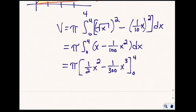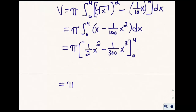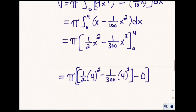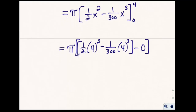We still have pi on the outside, and we evaluate from zero to four. We get one-half times four-squared minus one-over-three-hundred times four-cubed, and then subtract zero, because evaluating the function at zero gives us zero. So we get pi times: one-half of sixteen is eight, minus sixty-four over three-hundred.